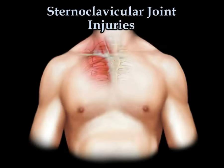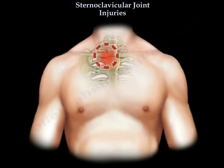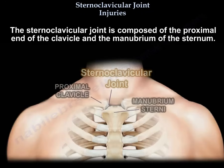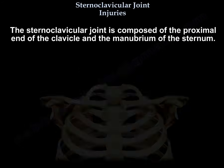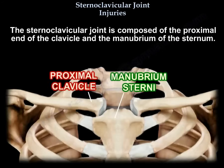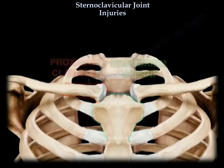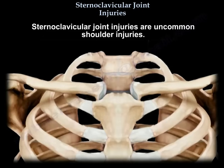Sternoclavicular joint injuries. The sternoclavicular joint is composed of the proximal end of the clavicle and the manubrium of the sternum. Sternoclavicular joint injuries are uncommon shoulder injuries.